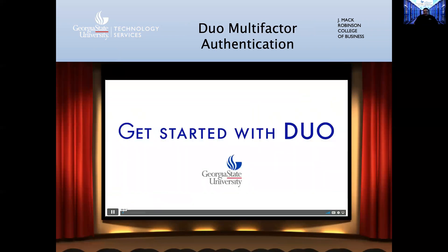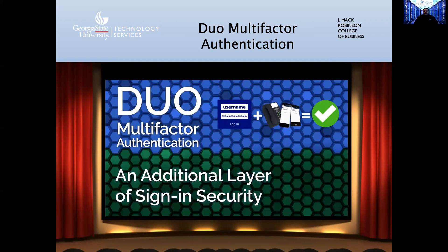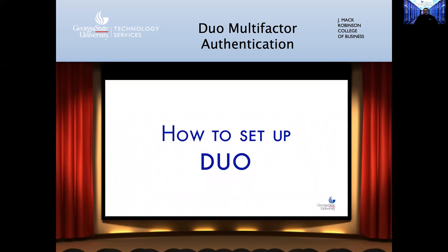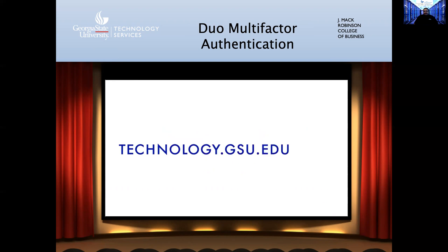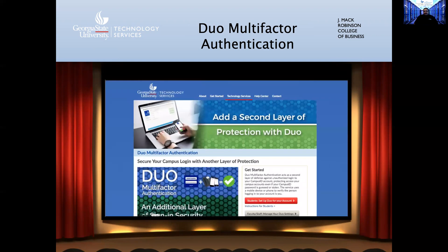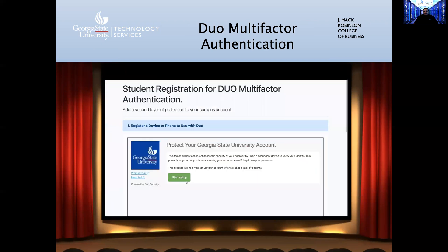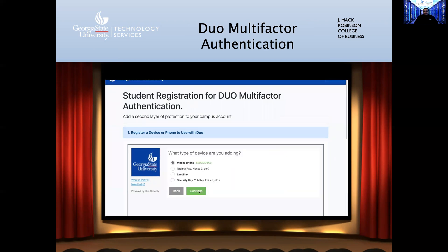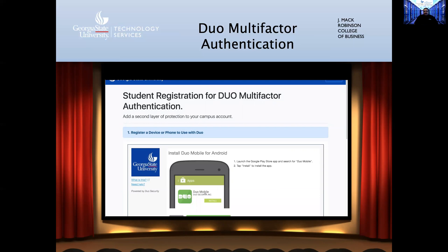This video shows you how to activate your Duo account and how you will log in once Duo has been activated. To set up Duo, go to technology.gsu.edu, then click the red button, and click Get Started to begin. For this example, we will demonstrate how to set up a mobile phone. Choose Mobile Phone and click Continue, then choose the type of phone and click Continue. For this example, we chose Android. The process is very similar on other devices, and detailed instructions are available on the web. The next few steps will require your phone.